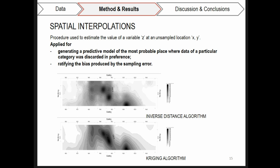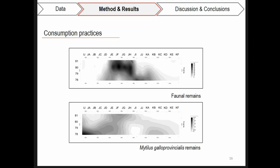The predictive models were generated through the realization of spatial interpolations. Through these, we were able to observe where was the most probable place where data of a particular category was discarded. It is relevant to highlight that spatial interpolations were not produced to estimate the value of a variable at an unsampled location, but for rectifying the bias produced by the sampling units employed.